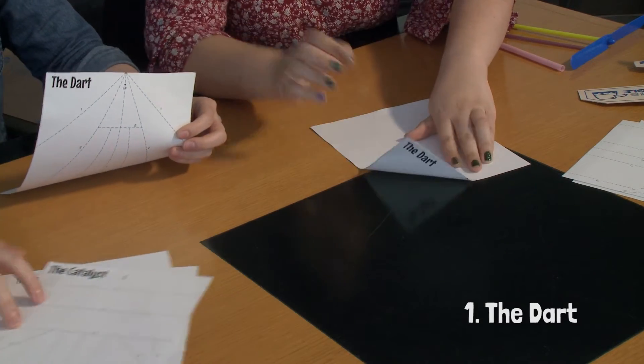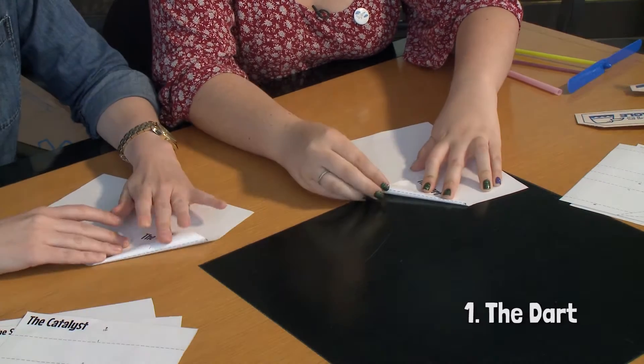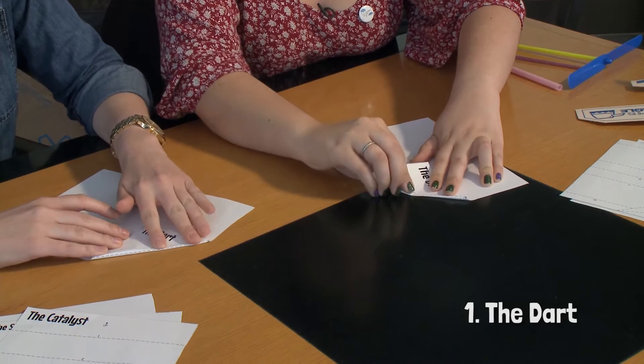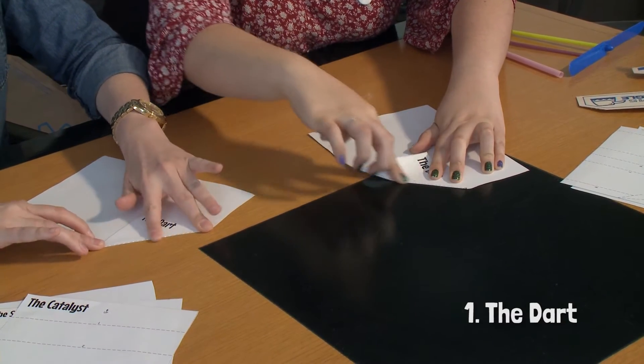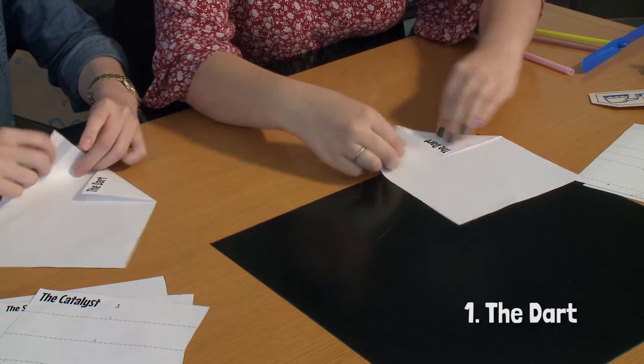Okay, so we're going to start with the dart. First thing, we're going to fold these corners in so that we can see the line that says number one. Like that. Nice sound effects. And we're going to do that again.